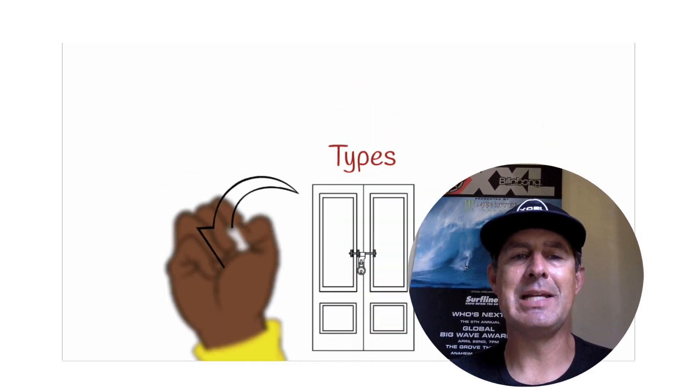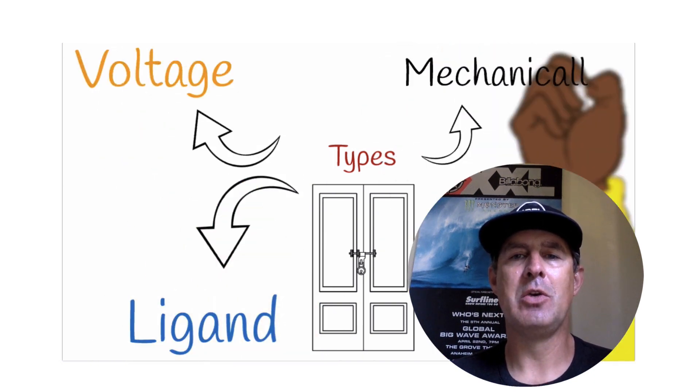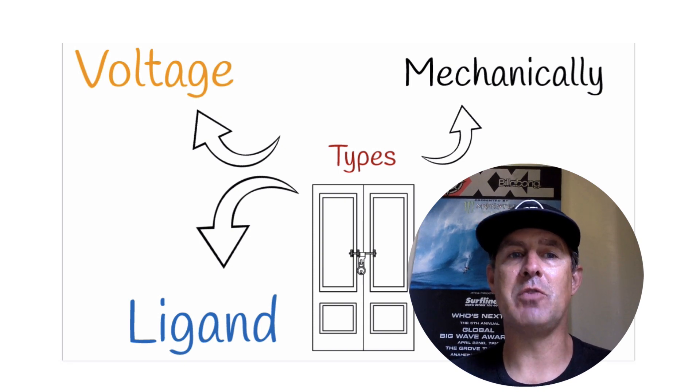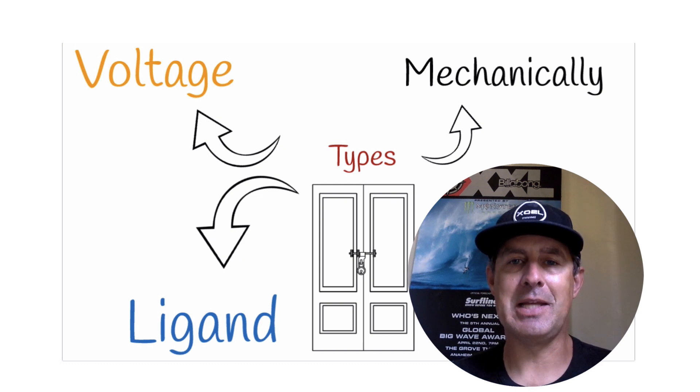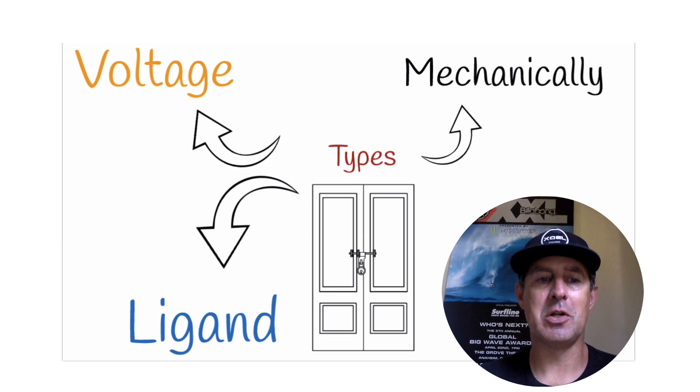We have ligand-gated channels, which open up when a signaling molecule binds to them. We have voltage-gated channels, which open up when there's a change in voltage in the cell. And we have mechanically-gated channels that open up when there's some sort of physical change in the channel protein. It could be due to pressure, stretch, some sort of push, physical deformation of that protein. So we're going to take a look at all of those.